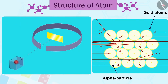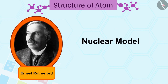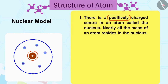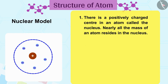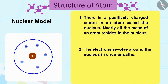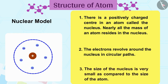Based on his experiments, Rutherford presented the nuclear model of the atom. 1. There is a positively charged center in an atom called the nucleus. Nearly all the mass of an atom resides in the nucleus. 2. The electrons revolve around the nucleus in circular paths. 3. The size of the nucleus is very small as compared to the size of the atom.